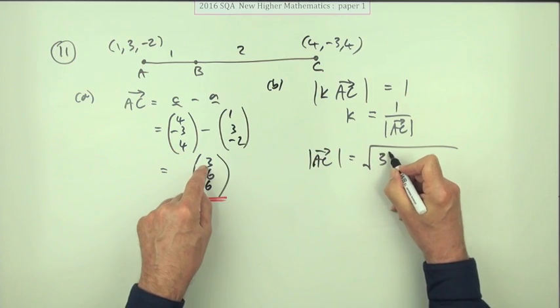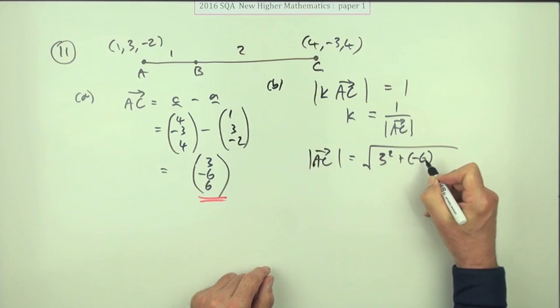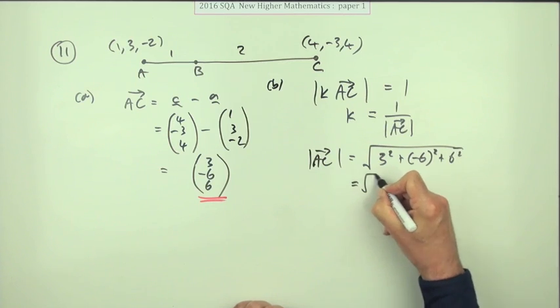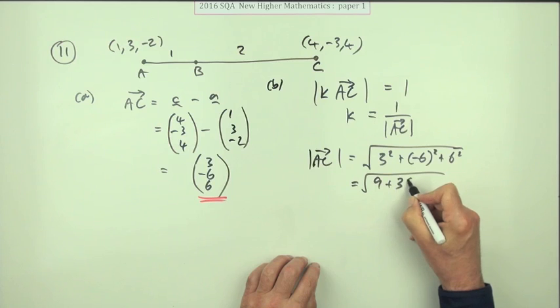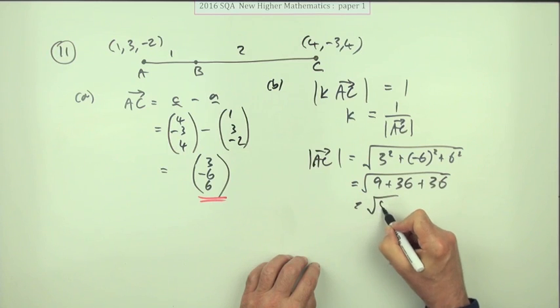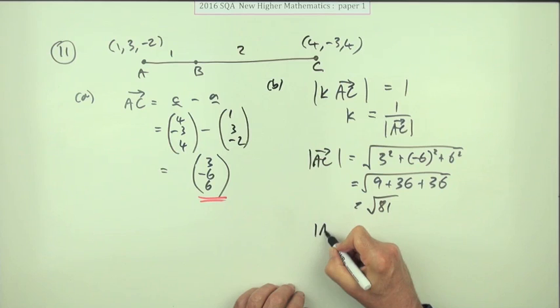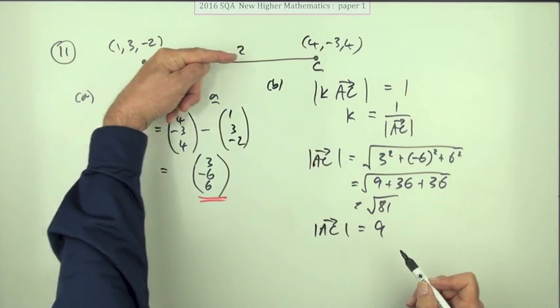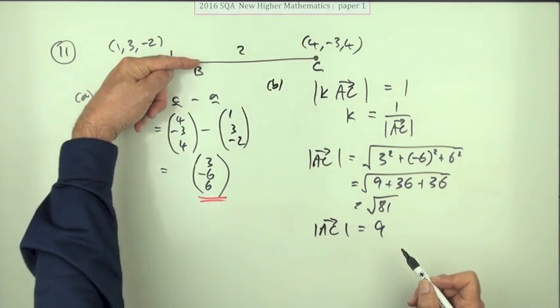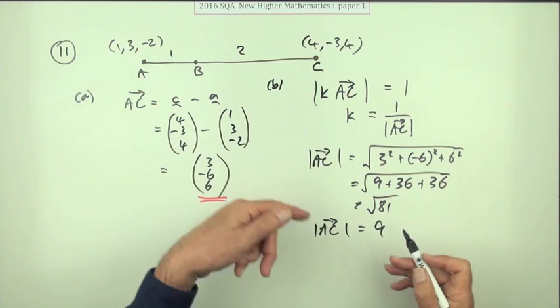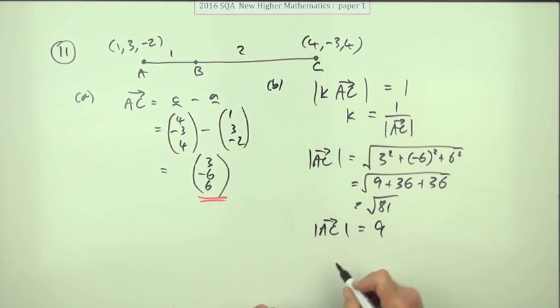That's 9 + 36 + 36 = 81. Very good, a nice square. The magnitude of AC is 9, so if you wanted a vector of length 1, you would divide by 9. Therefore K equals 1/9.